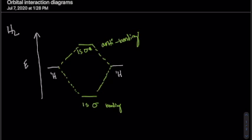By looking at the periodic table, you would see that each hydrogen atom has one electron, and they're both going to go down into the bonding orbital.